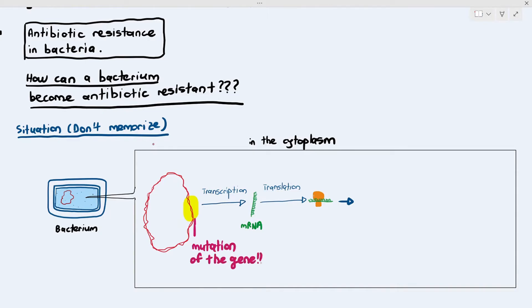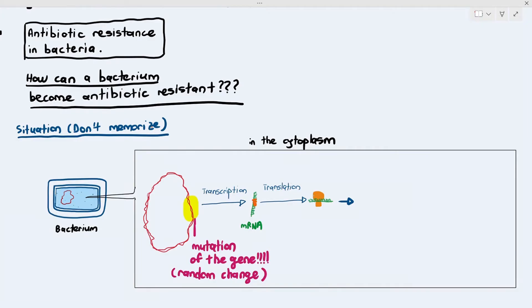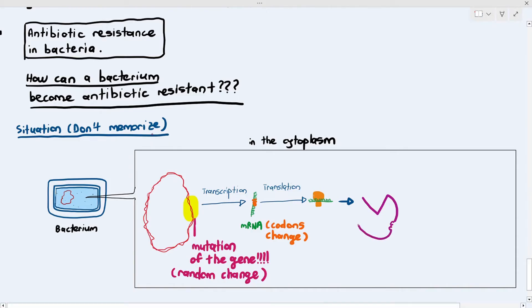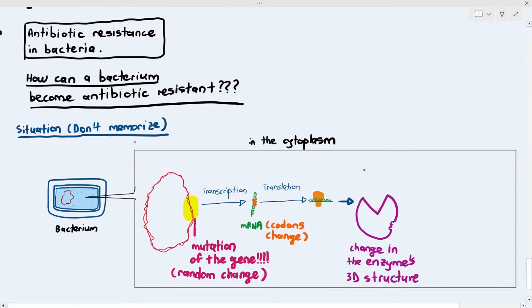Now imagine another bacterium is still alive, but that gene underwent a particular mutation. Mutation of the gene means a random change in the base sequence of the gene. If the base sequence changes, the codons on the mRNA will change as well, and if the codons change during translation, the protein structure may also change. Look at the shape of the enzyme — there is a change in 3D structure.